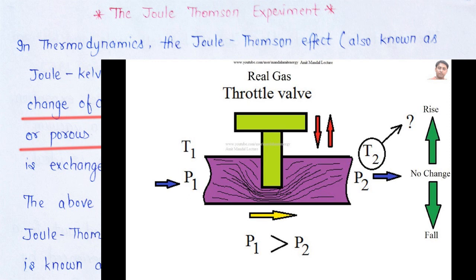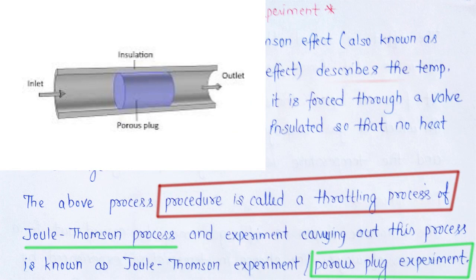पूरे procedure के अंदर system को adiabatic रखा गया था, जिसका मतलब है environment के साथ कोई भी heat exchange नहीं होनी थी। इस procedure को throttling process of Joule's experiment या porous plug experiment के नाम से जाना जाता है, क्योंकि इसके अंदर throttling valve की जगह porous plug का इस्तेमाल किया गया था।